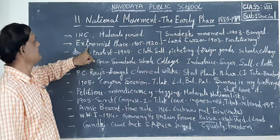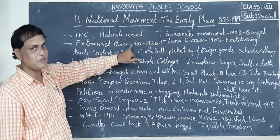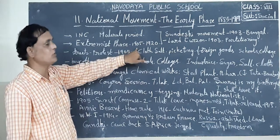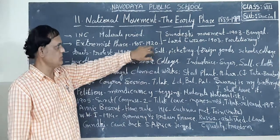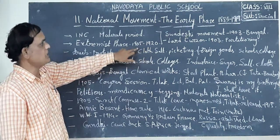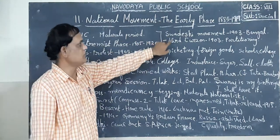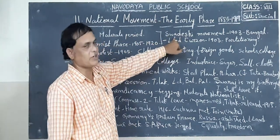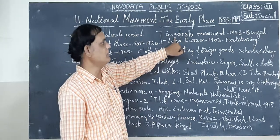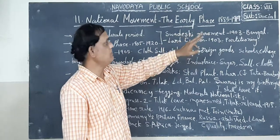The next period is the extremist phase. What is that next period? Extremist phase - the period between 1905 to 1920. In this phase, look at these ones. The Swadeshi Movement started in 1903 in Bengal.